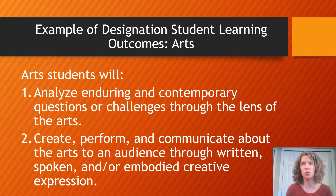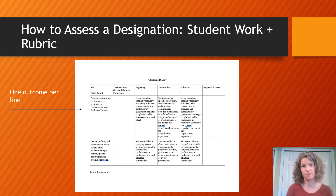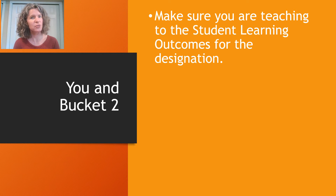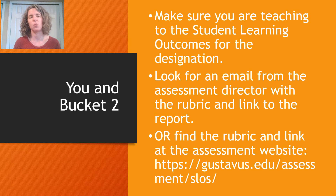What we do at the general education level is give you a rubric created by a group of faculty and ask you to assess usually one outcome per semester based on that rubric. It's a simple rubric — there is one line per outcome. You use this rubric while you're grading an assignment you already have in the class, fill it out, and then fill out the report you'll get from me. Make sure that you're teaching to the student learning outcomes in your designation, and look for an email from the assessment director before the semester begins telling you which outcome we're going to assess for your designation that semester. You can also find the rubric and link on the assessment website.